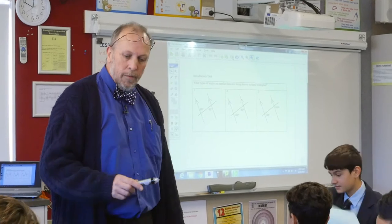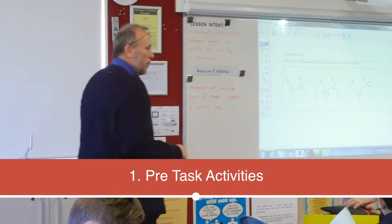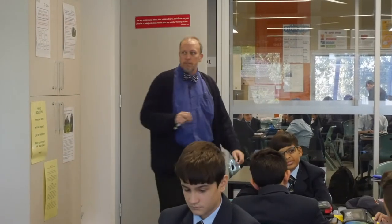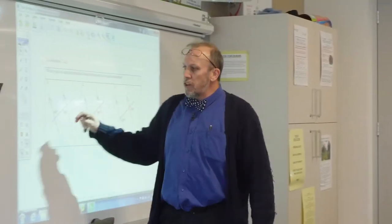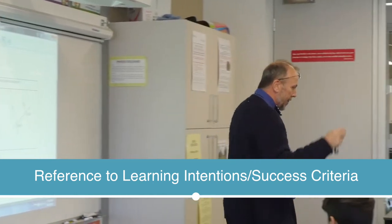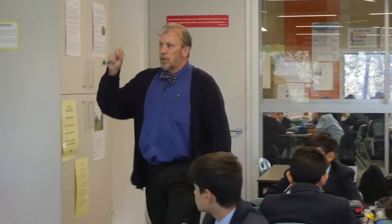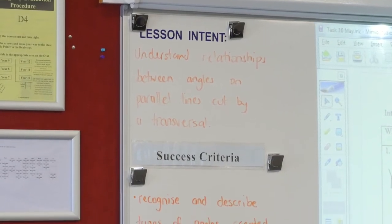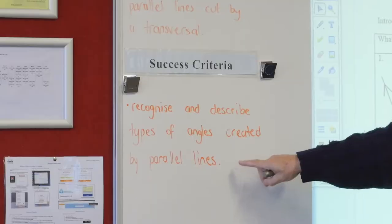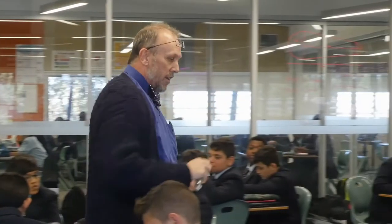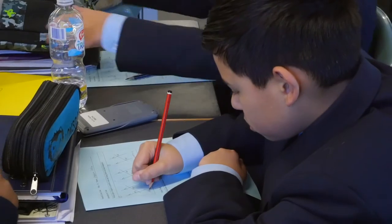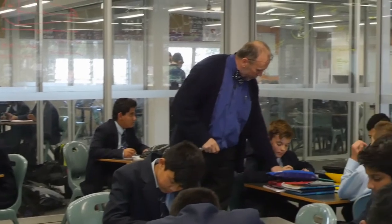Good morning gentlemen. From our introductory task, we're seeing some of the angles that we did last lesson and we should be naming those angles. I'll give you a few more minutes to finish those off, but I'll need you to name those angles. What we want to do today is see if we can recognize and describe all the types of angles that we see with parallel lines. We should be checking that off at the end of the lesson.